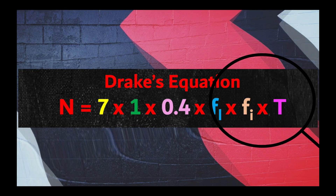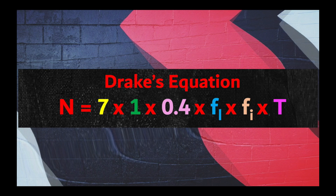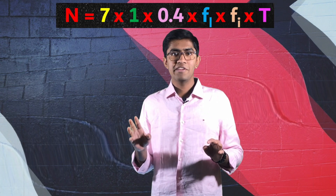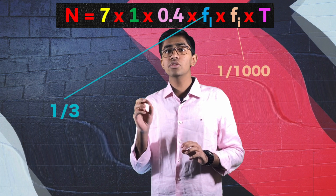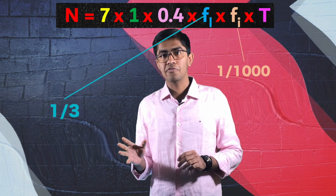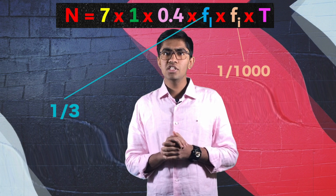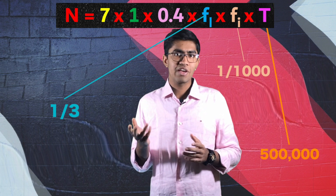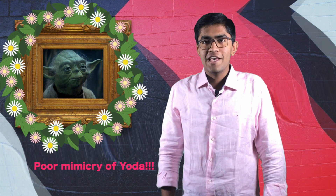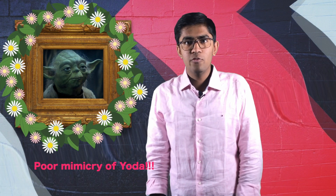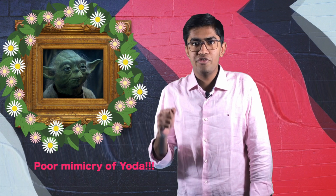We know nothing about the remaining numbers — those could be anything. Taking a moderate viewpoint, let's say about a third of the planets develop life, but only 1 in 1,000 develop intelligent life, and civilizations last for approximately 500,000 years. Plug in those numbers and you get the number of intelligent alien species in the entire universe as... in a galaxy far, far away, fighting with the Jedi to save the universe.